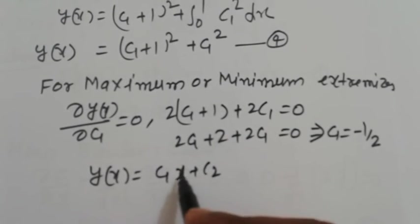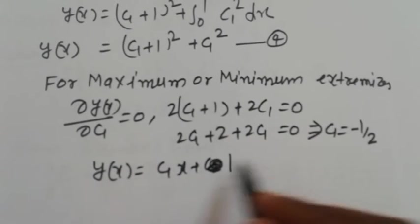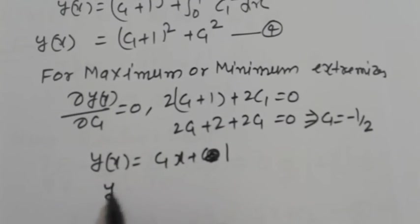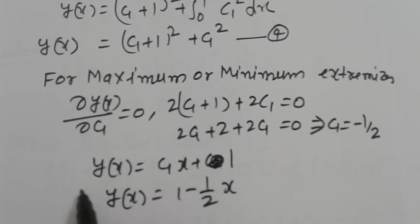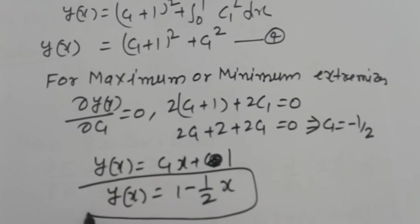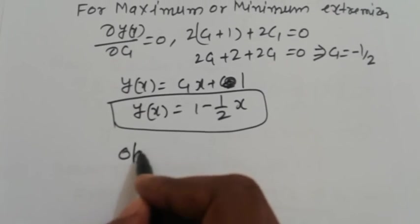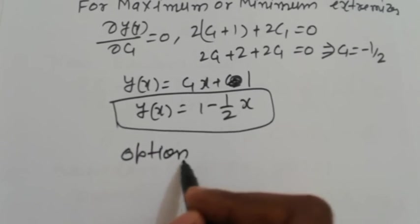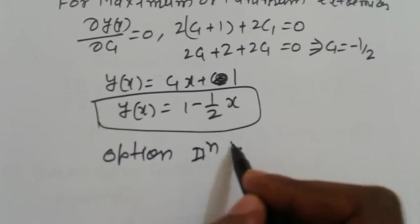So now y(x) = C₁x + 1. Put the value of C₁ here, so y(x) = 1 - ½x. This is option 2, which is correct.